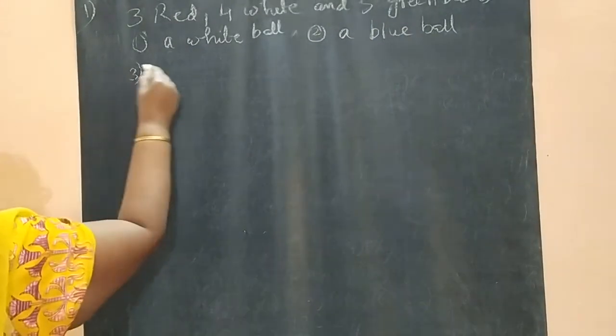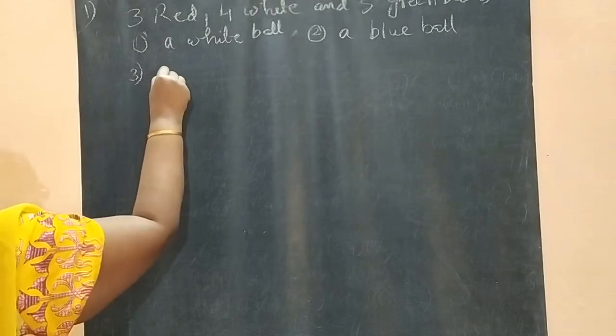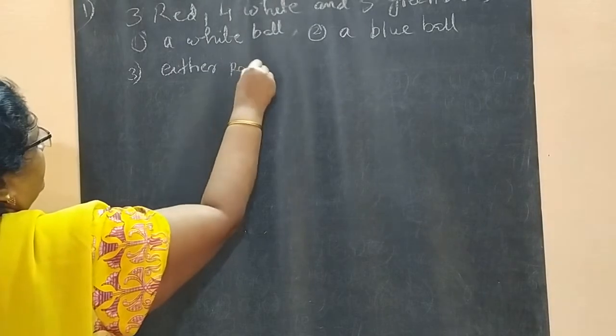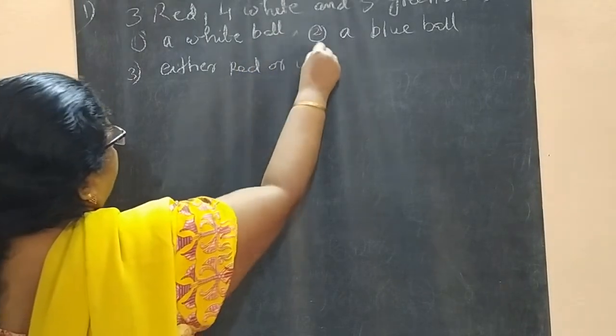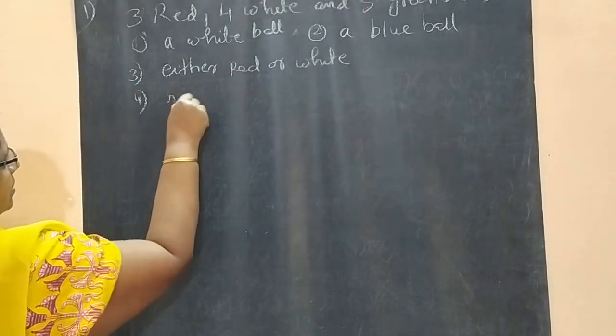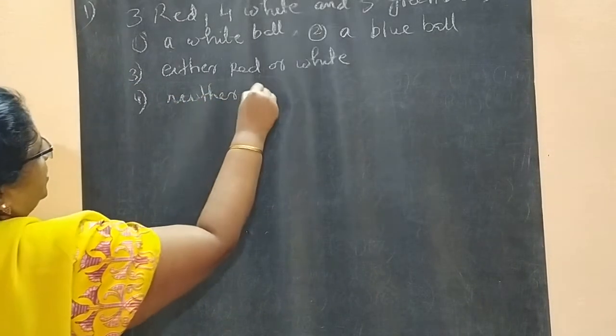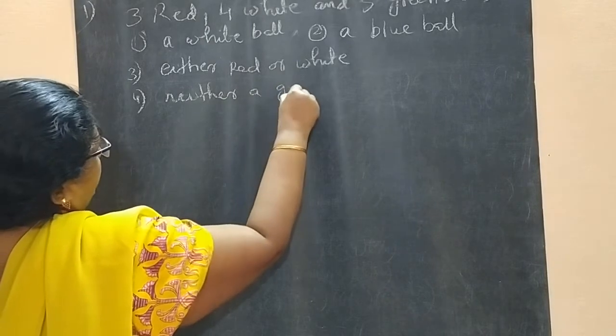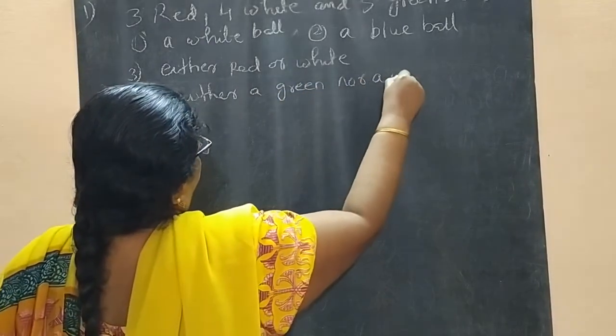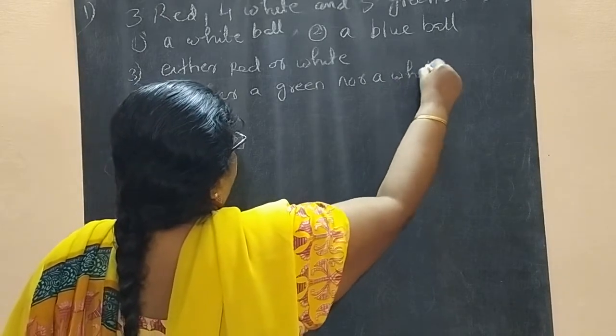Third one: either red or white. Fourth one: neither a green nor a white ball.